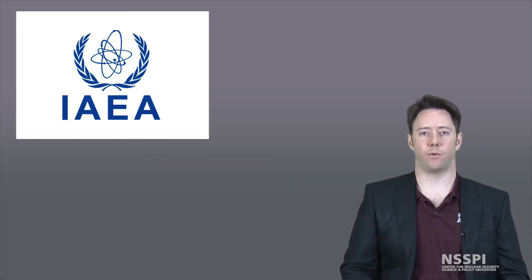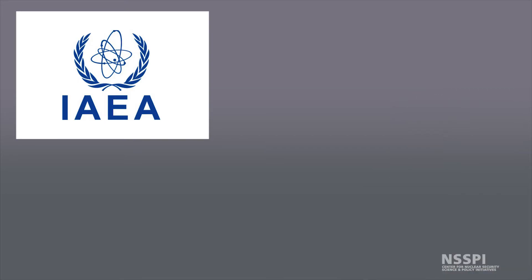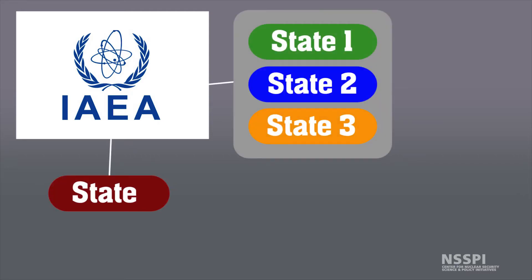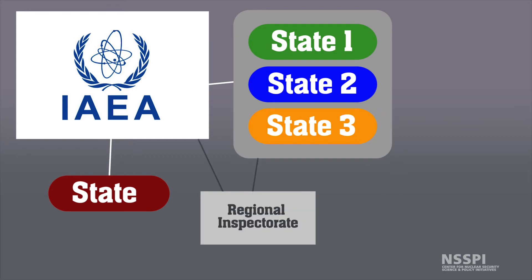In this section, we're going to take a look at the legal agreements for IAEA safeguards. Safeguards agreements can be concluded between the IAEA and a single state or even groups of states. There may also be a regional inspectorate involved with these agreements. If the safeguards agreement is with a group of states, there may be an independent or collaborative regional inspectorate involved.